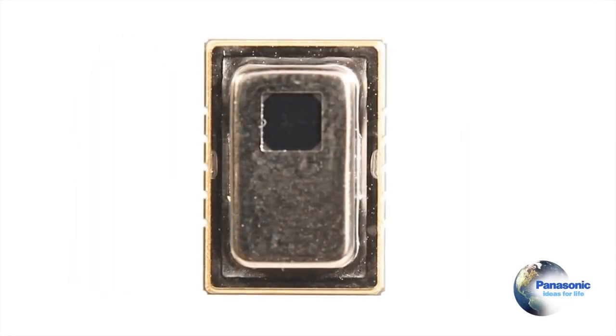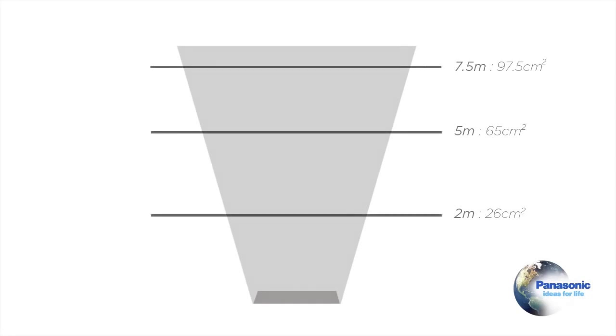The GridEye sensor utilizes an 8x8 pixel array of thermopile detection elements that each has a 7.5 degree field of view. As the distance from the sensor increases, the field of view of each pixel also increases.